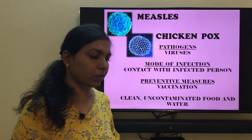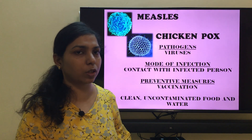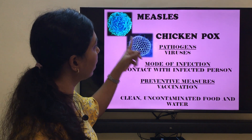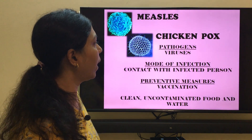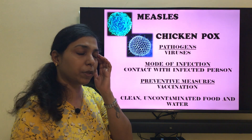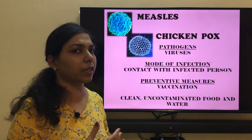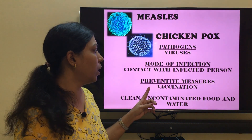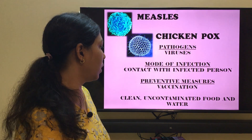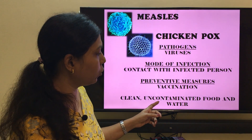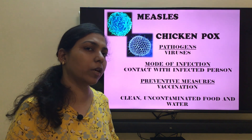Next are measles and chickenpox — tiny reddish rashes which appear on the body. Both are caused by viruses. The mode of infection is contact with an infected person; if you are in touch with someone suffering from measles or chickenpox, you can also contract the disease. Preventive measures include specific vaccinations given to children for both measles and chickenpox, maintaining personal hygiene, and consuming clean, uncontaminated food and water.